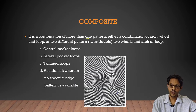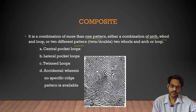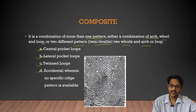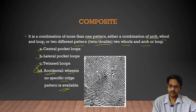Composites are a combination of more than one pattern — either a combination of arch, whorl, and loop, or two different patterns like twin or double whorls, arches, or loops. Subtypes include central pocket loops, lateral pocket loops, twin loops, and accidentals — a peculiar type where no specific ridge pattern is identifiable.